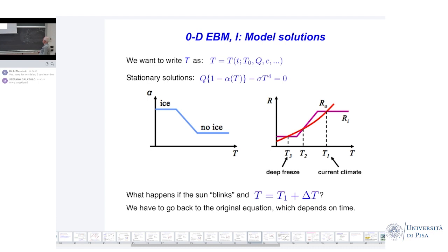For plausible values of the constants, you have three intersections: T1, T2, and T3. T1 corresponds to the current climate, T2 is called the deep freeze — what was called a deep freeze at the time — and T2 is the intermediate unstable one. So we have three solutions whose stability we want to study. We set T equal to Tj plus theta, where f of Tj equals zero for j equals 1, 2, 3, and expand f of T in a Taylor series, neglecting the quadratic and higher terms.